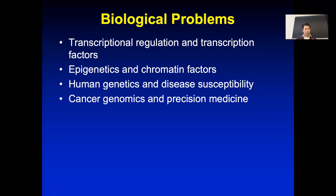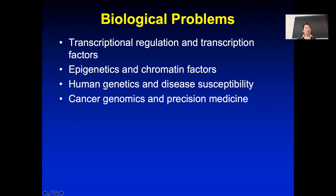We also talk about epigenetics and chromatin factors and how they help mammalian genomes do transcription regulation. Because the mammalian genome is so big and the important regions are only a small percentage, epigenetics helps identify which locations might be more important — to focus the cell to have a faster or more effective response. And using epigenetic data we can help understand human genetics.